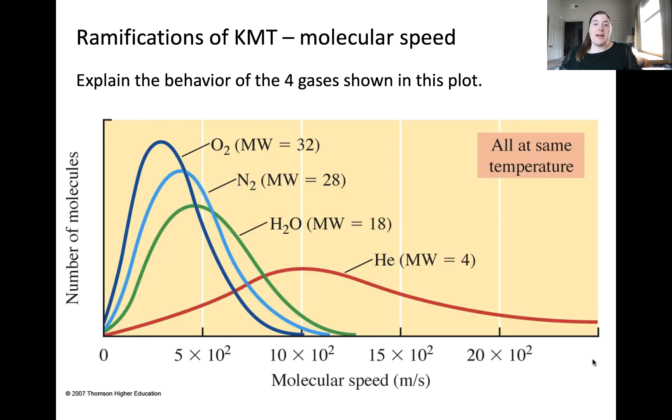Here is another series of plots showing the number of molecules again versus molecular speed. This time, we are looking at four different gas samples that are all at the same temperature. The difference is that the gas samples have different molar masses. You will observe that the gas with the lowest molar mass is helium, represented by the red curve, and the gas with the highest molar mass is oxygen, represented by this dark blue curve.